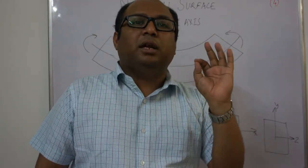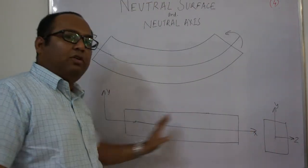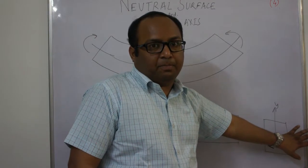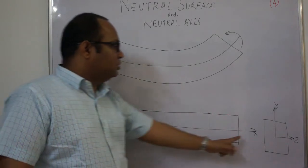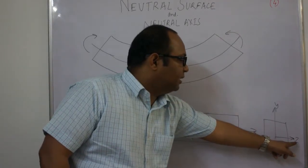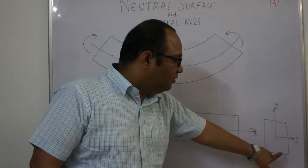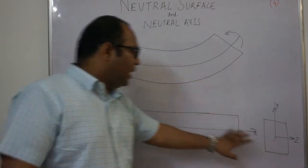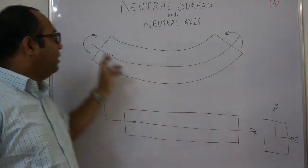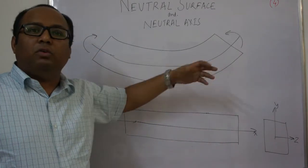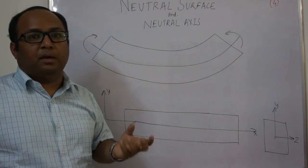Let us suppose this is the front view of the beam and this is the side view of the beam. This Y-axis is your longitudinal axis. This is the cross-sectional view of the beam, and this is the front view. If you apply a bending moment, this is the exaggerated view of the deformation which will happen on the application of the deforming load — in this case, a bending moment.